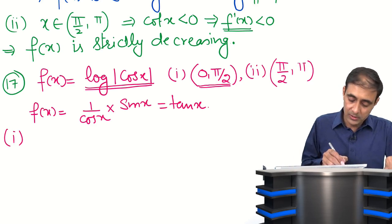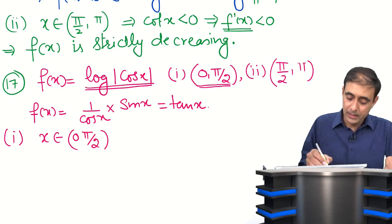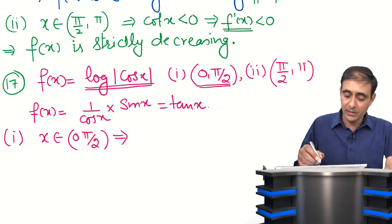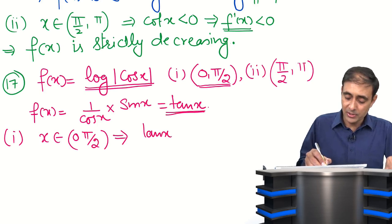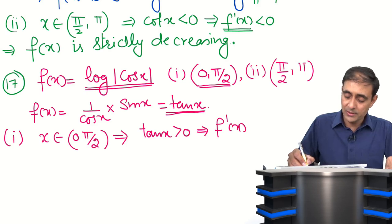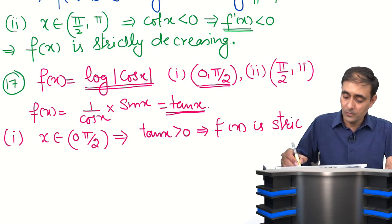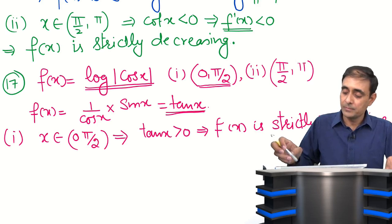Now for the first part, x belongs to (0, π/2). If x belongs to (0, π/2), then it is the first quadrant, and in the first quadrant tan x is greater than 0. This implies f'(x) > 0, which implies f(x) is increasing.